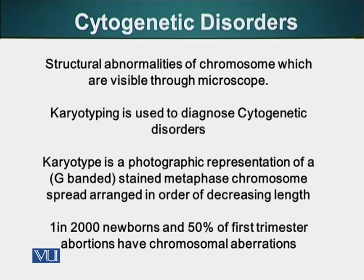In order to detect cytogenetic disorders, a technique called karyotyping is used. Karyotyping is a photographic representation of G-banded, stained metaphase chromosomes spread in order of decreasing length. Additionally, chromosomal abnormalities occur roughly in 1 in 2000 newborns, and 50% of first trimester abortions have chromosomal abnormalities.